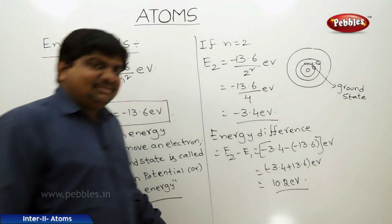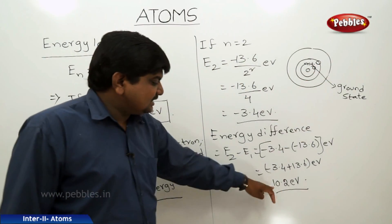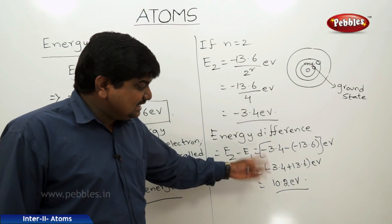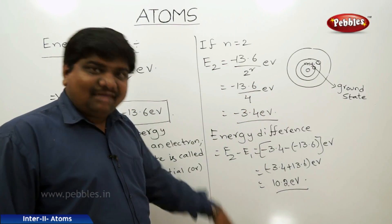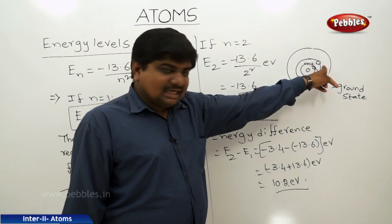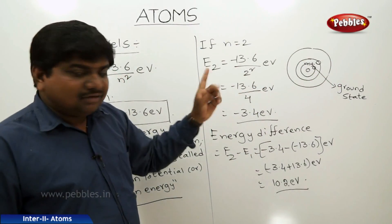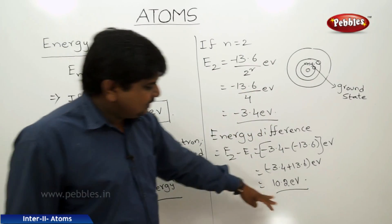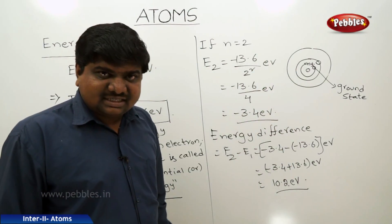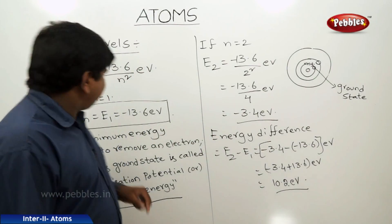The energy difference between the first and second energy levels is 10.2 eV. That means the electron received that much energy due to electron collision and jumped to the next energy level. If you want to remove an electron from that energy level, this much energy is required. Now we will see the energy required for the third state as well.